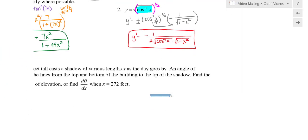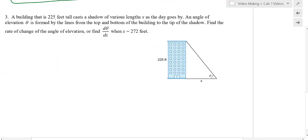All right, let's look at an application here. A building that is 225 feet tall, which is labeled here for us, casts a shadow of various lengths x as the day goes by. An angle of elevation theta, also labeled, is formed by the lines from the top and bottom of the building to the tip of the shadow.